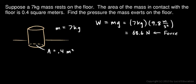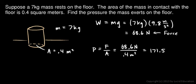That's the downward force acting on that area. So when we calculate the pressure, pressure is force over the area. That's the force that we use. 68.6 newtons divided by an area of 0.4 square meters. And that comes out to 171.5 newtons per square meter.